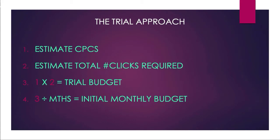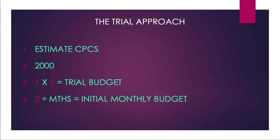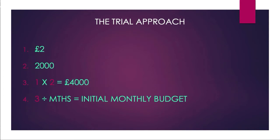There can be a lot less tenuous analysis with this approach. The main thing you'll want to get a good handle on is CPCs, because they're a direct multiplier. If you think it will take about 2,000 clicks to get through the initial trial and error and reach a benchmark performance level — which is not an unreasonable number in most cases — and you expect CPCs to be around £2, that's £4,000, which makes sense to split into two months of £2,000 each, or three months of about £1,333.